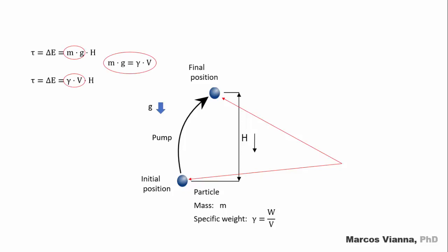But mg is the weight of the particle, which is also equal to gamma v. Thus, the work will be equal to gamma vh. We define power as the work performed during the time t. But the volume divided by the time is the flow q. So, the power will be equal to gamma qh.